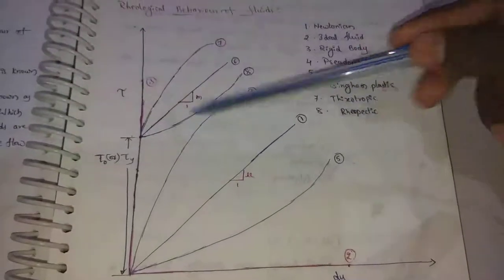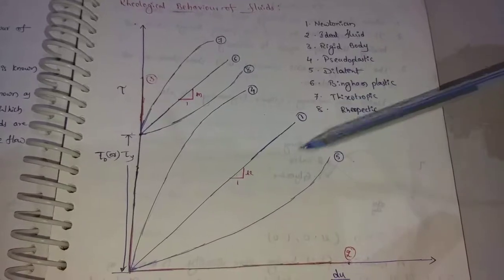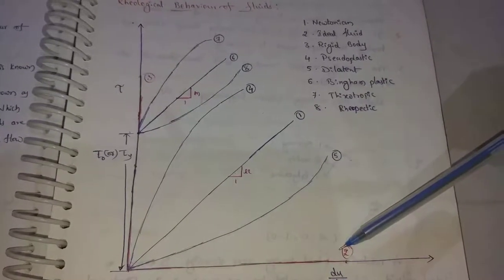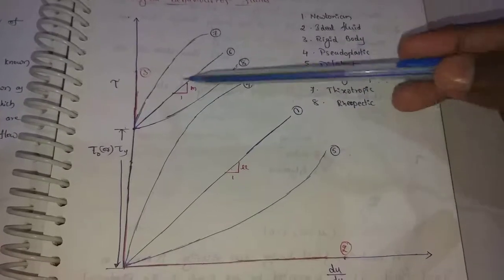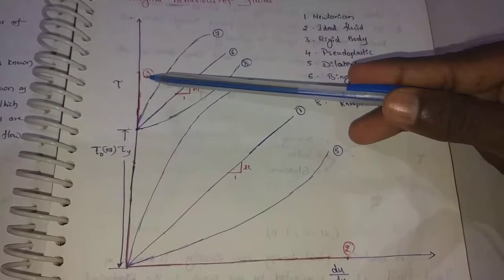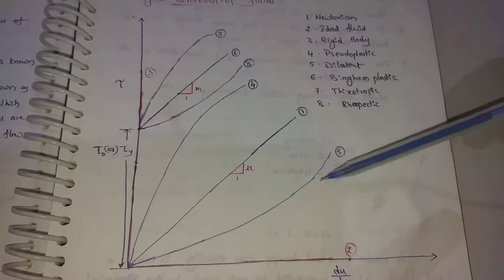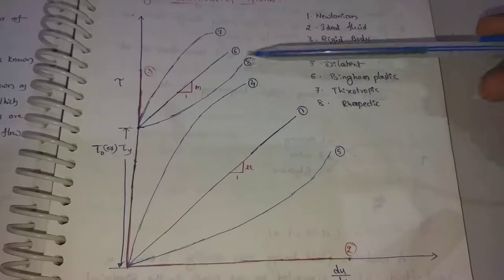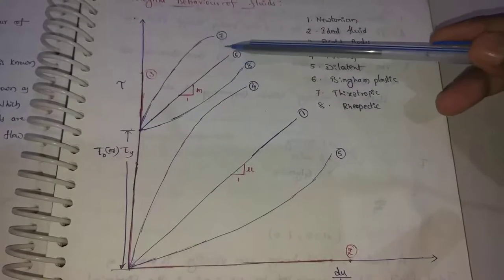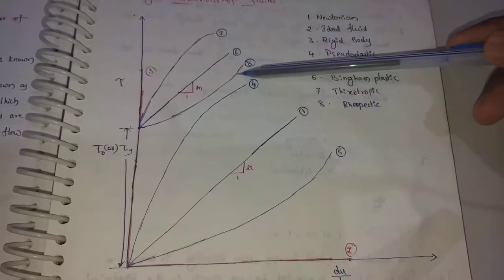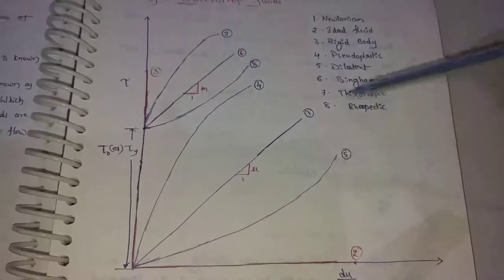The first one is t0. The fluids are: first, ideal fluid; third, rigid body; fourth, pseudoplastic; fifth, dilatant; sixth, Bingham plastic; seventh, thixotropic; eighth, rheopectic. So there are 8 fluid types.